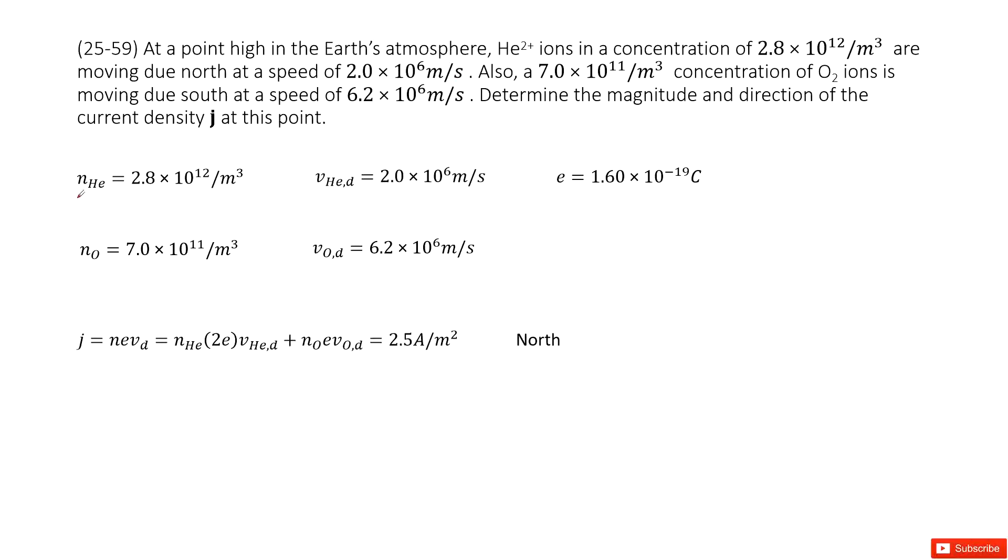We know n_He is given as this number, and the drift velocity for helium v_He,d is given. Also we know the oxygen atom quantities, n_O is there, and the drift velocity for oxygen v_O,d is there. And we can get the charge for the electron e is this one.